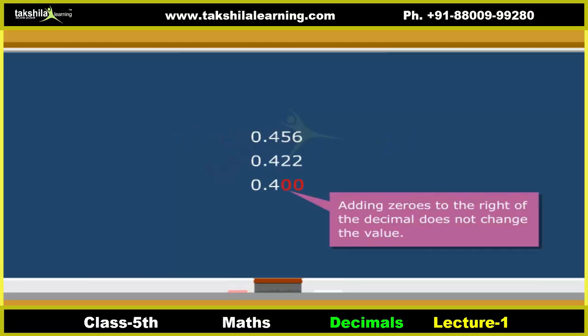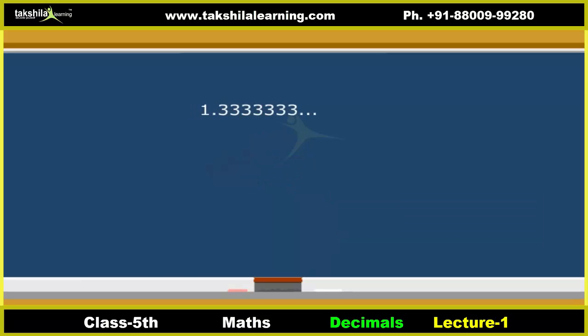Remember, adding zeros to the right of the decimal does not change the value. Some decimals don't stop and go on adding numbers to the right forever.